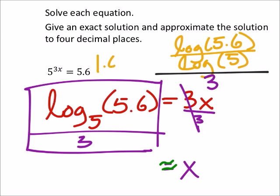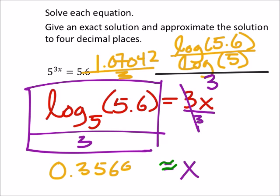That is 1.07042, and then we would divide that by 3, which would be - and this is the approximation to four decimal places - 0.3568. So the exact value is boxed there in purple, the approximation is boxed there in gold.